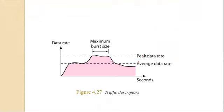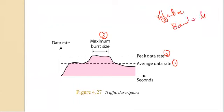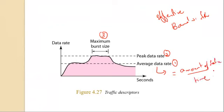We have four terms: first is the average data rate, then peak data rate, maximum burst size, and effective bandwidth. Average data rate is basically the number of bits sent during a period of time. The formula is: average data rate equals amount of data divided by time. This is a very useful characteristic of traffic because it indicates the average bandwidth needed.